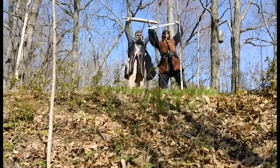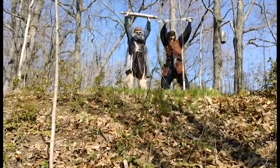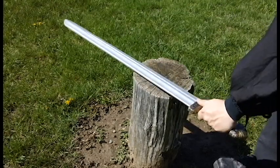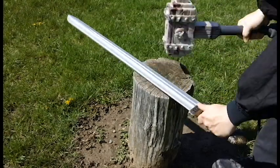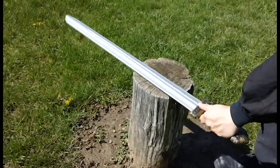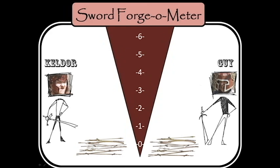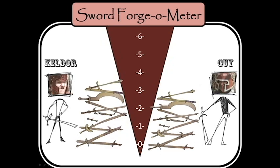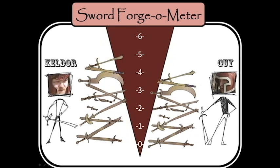Both Kelder and Guy took 2 hours to kill 25 orcs. With both feeling pretty good about themselves, they set out to find out who was better at forging swords. Both were timed as they set out to forge swords for 20 hours. Kelder forged 5 swords in 20 hours of work, while Guy forged 4 swords in 20 hours of work.